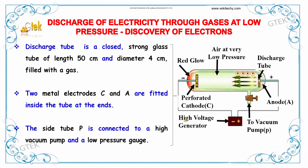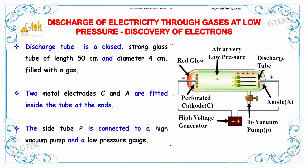Now we will discuss the discharge of electricity through gases at low air pressure and the discovery of electrons. The discharge tube is a closed strong glass tube of length 50 cm with a diameter of 4 cm, filled with gas at very low pressure. You can see the red glow produced.